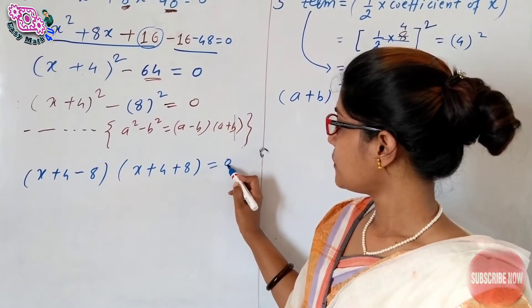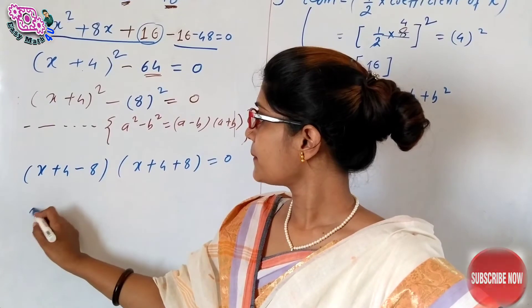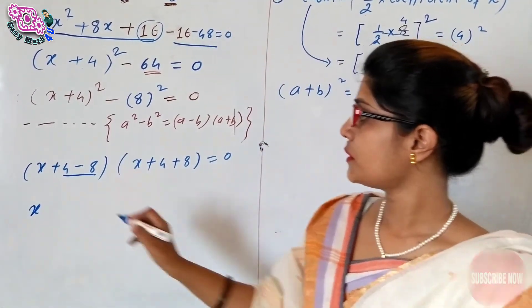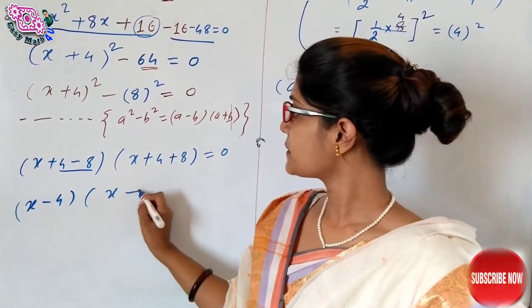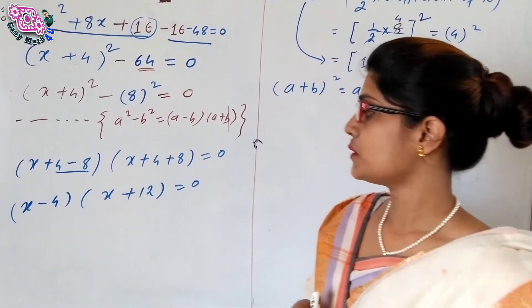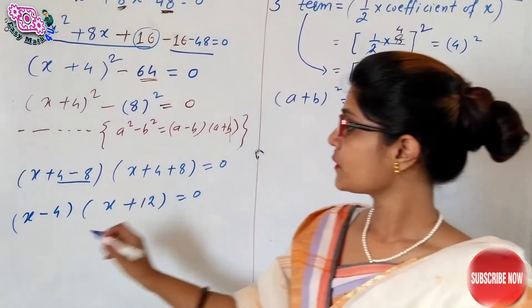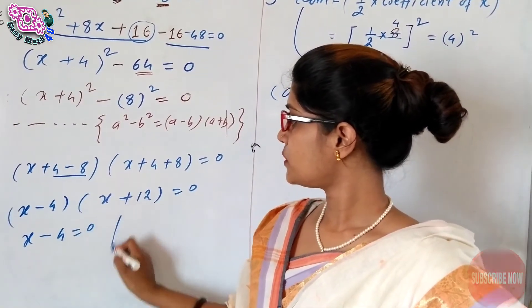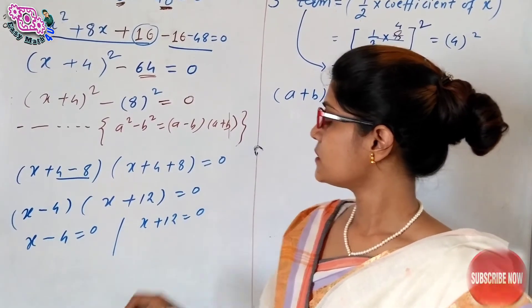Comparing and solving the brackets: in the first bracket, x plus 4 minus 8 gives x minus 4, and in the second bracket, x plus 4 plus 8 gives x plus 12. So we get (x minus 4)(x plus 12) equals 0, giving x minus 4 equals 0 and x plus 12 equals 0.